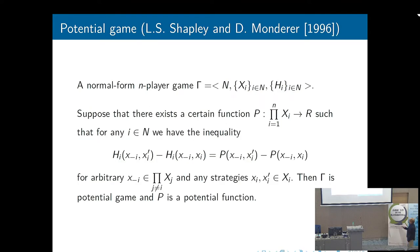The game Gamma is potential if there exists some function P for which we have the following equality: the difference of private payoffs for player i is equal to the difference of potential functions in the profile, when we fix the profile X and change only the strategy of player i. So if we change the strategy of player i from Xi to Xi-prime, the difference of his payoff is equal to the difference of the potential. If this function exists, the game is potential.